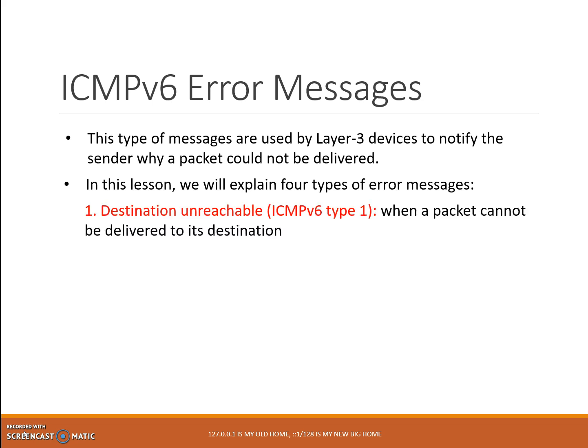Number one: Destination Unreachable, ICMPv6 Type 1. An ICMPv6 Destination Unreachable message is sent when a packet cannot be delivered to its destination for reasons other than congestion.